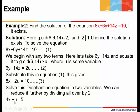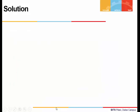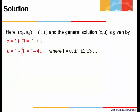Dividing by 2 gives 4x + u = 5. This is a linear Diophantine equation in two variables x and u, which can be solved easily. The initial solution is x = 1, u = 1, since 4 + 1 = 5. So x₀ = 1 and u₀ = 1, giving the general solution x = 1 + t and u = 1 − 4t.